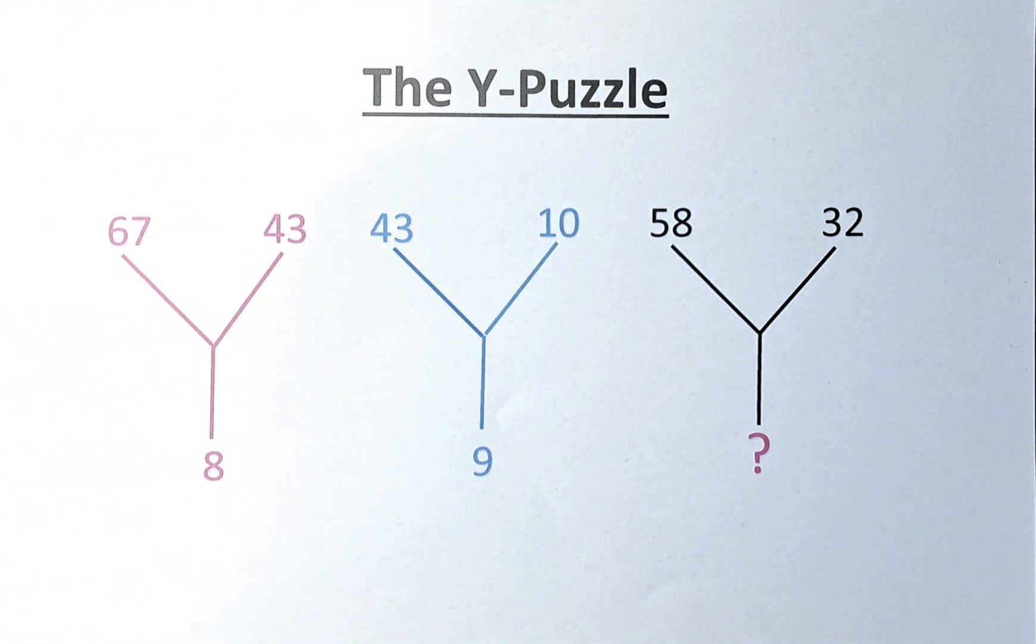In the first Y, we have 67, 43 and 8. In the second Y, we have 43, 10 and 9. And in the last Y, we have 58, 32 and a question mark.